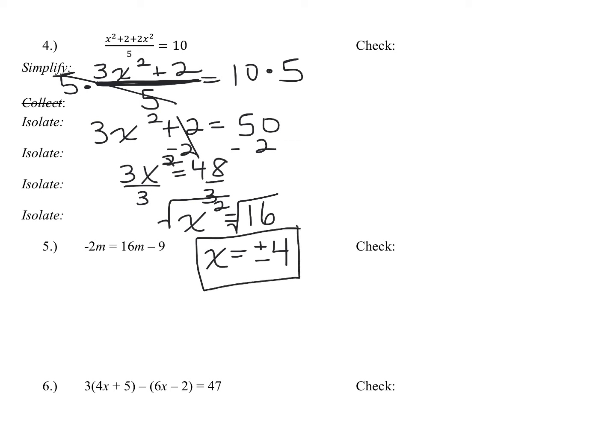When I go to check it, remember, when you're checking a negative, you have to remember parentheses around it. So let's just check the positive to start. I'm going to start by plugging four in for x. So I'm going over to the original problem, and I'm doing four squared plus two plus two times four squared over five equals 10.